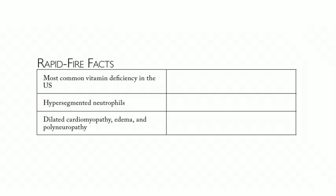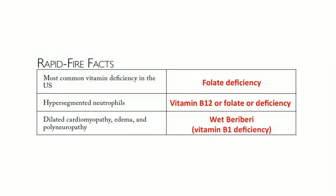A few rapid-fire facts: most common vitamin deficiency in the United States — folate deficiency. Hypersegmented neutrophils are a feature of megaloblastic anemia from either B12 or folate deficiency. Dilated cardiomyopathy, edema, and polyneuropathy — that's wet beriberi, due to thiamine or B1 deficiency.